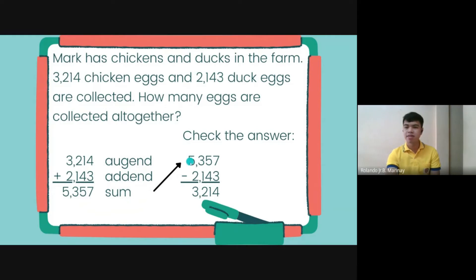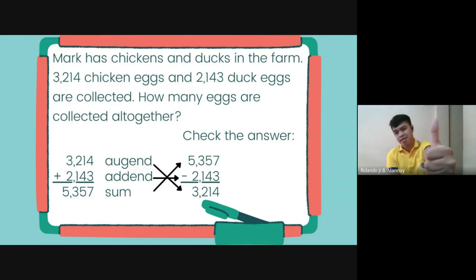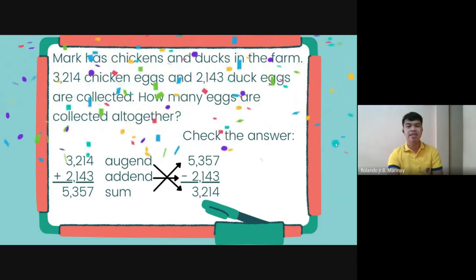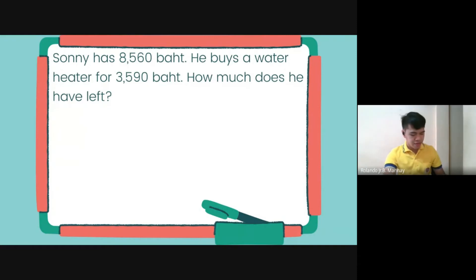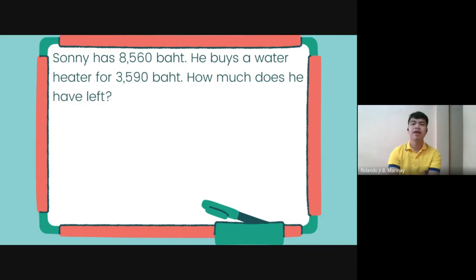The sum is on top, the addend is the next number, and the difference should be the same as the augend. Did you understand so far? In the first problem we studied the relation from addition to subtraction. Now we're going to try from subtraction to addition.